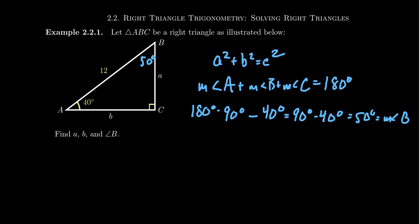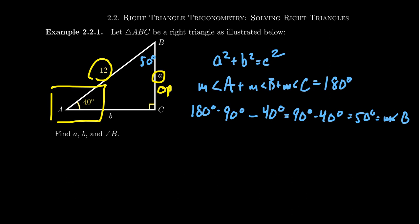If you know two of the angles, you know the third by the triangle angle sum. To find side lengths A and B, the SOHCAHTOA relationship comes into play. With respect to angle A, I'm going to use the given angle to avoid any risk of an error from a computed value. Since angle A is 40 degrees, side a is the opposite side and 12 is the hypotenuse, so the sine ratio applies.